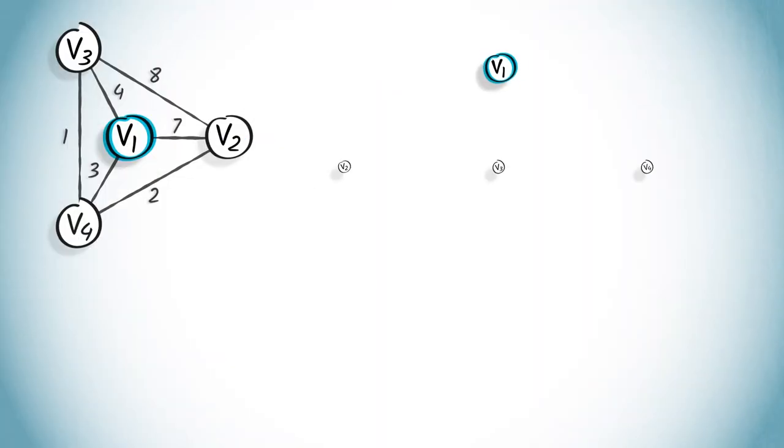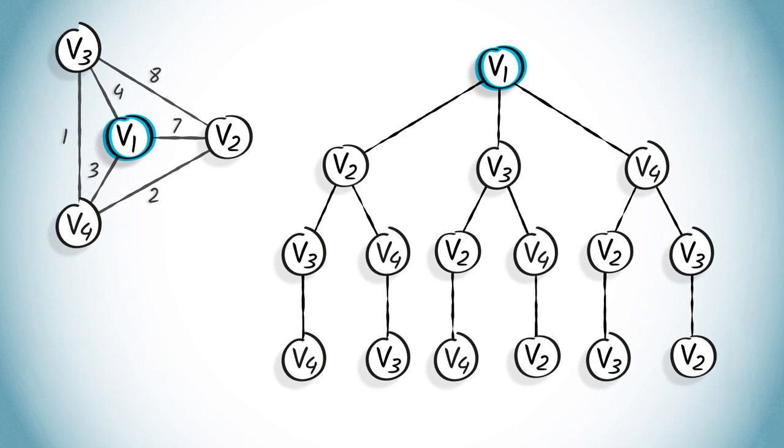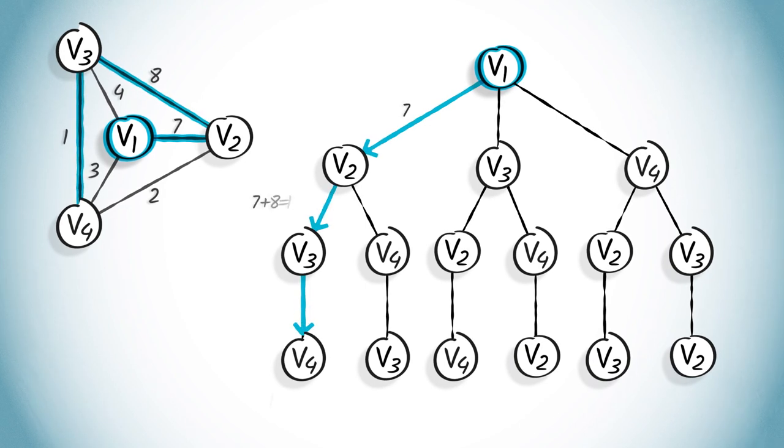The tree of all possible paths is shown here. The search starts on the left, by proposing the first solution, v1, v2, v3, v4, which has a cost of 16. This solution is stored in memory as the best solution identified so far.